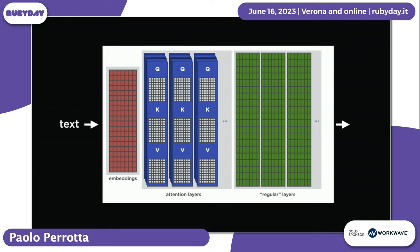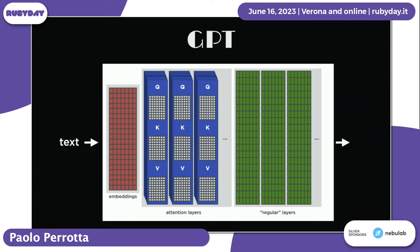If we take these and put them together, we have text, then a neural network that is a matrix of word embeddings — the text is broken down into tokens and converted to embeddings, then passed through a bunch of attention heads, and on top of that you put a regular neural network. You have to take into account word order as well. But this is the basic structure — this is called GPT.